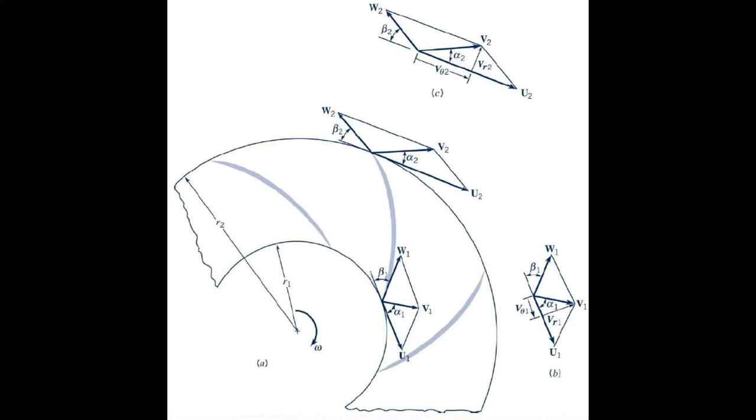And similarly, on the way out, have a velocity triangle, so W2 again coming out exactly parallel with the blade, U2 representing the blade motion, and V2 being the vector addition of U2 and W2, the absolute fluid velocity coming out.